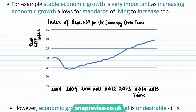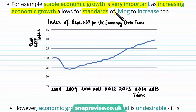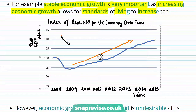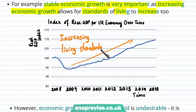Stable economic growth is very important as increasing economic growth allows for standards of living to increase. On this graph here, we can see the real GDP index for the UK over time, showing an increasing level of GDP from a base year in 2008 — indicating increasing living standards relative to 2008.